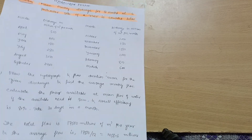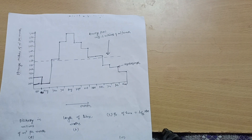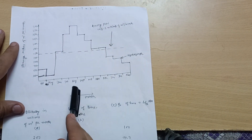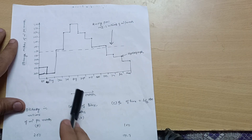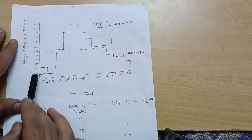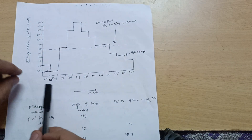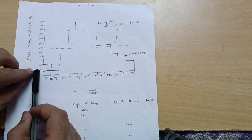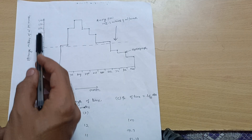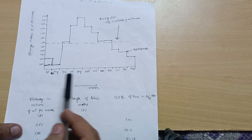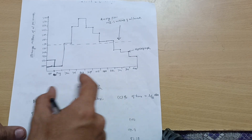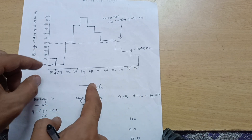From the given monthly flow data, the hydrograph is drawn. Since a hydrograph is a graphical representation between time and discharge, take month on the x-axis and discharge on the y-axis, with intervals of 250. Months go from April onward. For April, discharge is 500, so draw a horizontal line at 500 for that month segment.